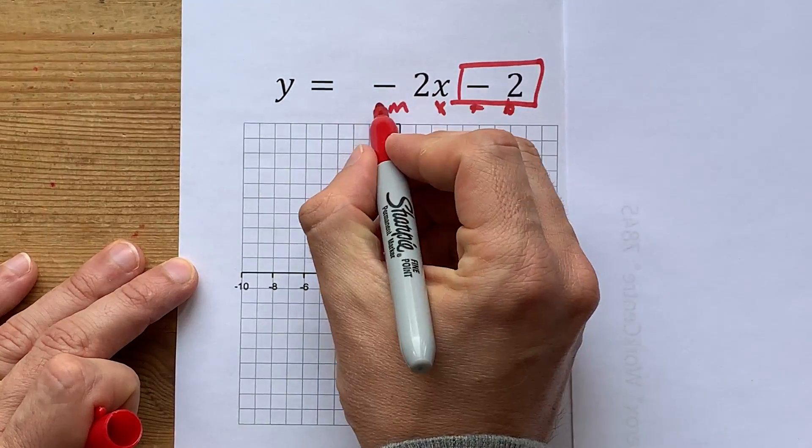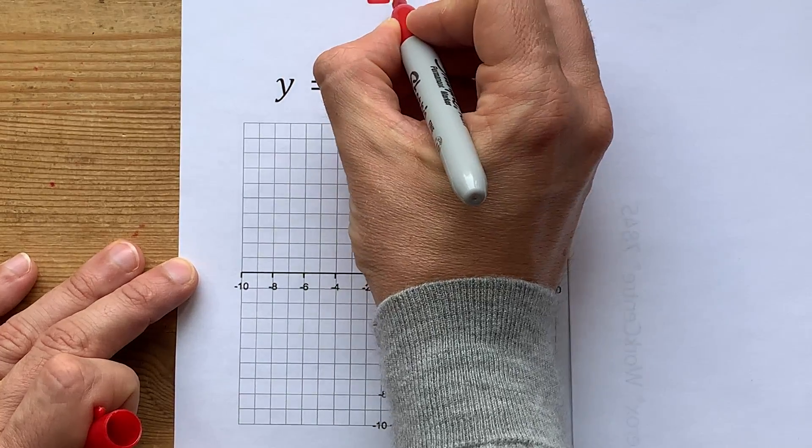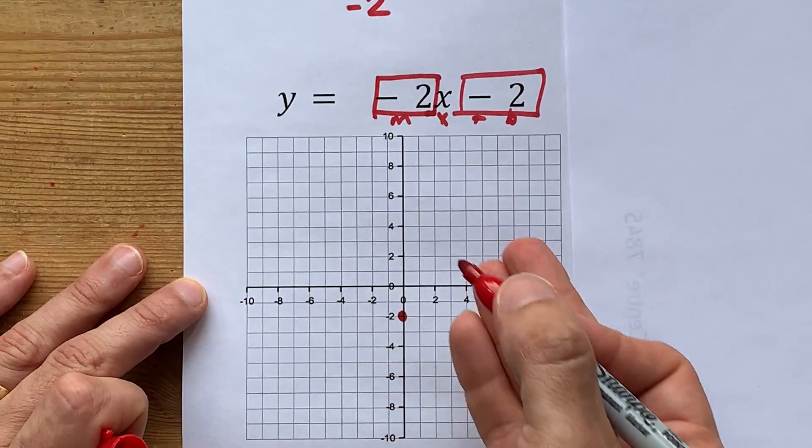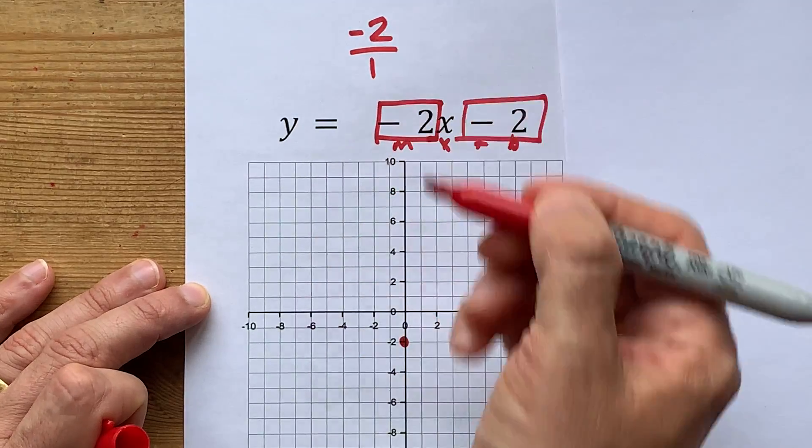Now this negative 2, where the m is, is the slope. A slope of negative 2 is usually written as a fraction, as negative 2 over 1, because dividing by 1 doesn't change what that number is.